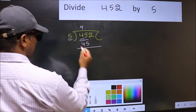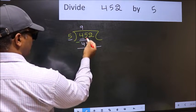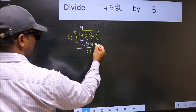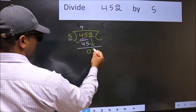Now you should subtract. 45 minus 45, 0. After this, bring down the beside number. So 2 down.